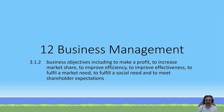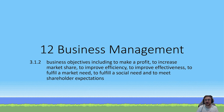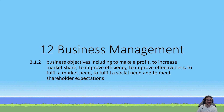G'day guys and welcome to this business management lesson. In today's lesson we're looking at key knowledge point 3.1.2, that is Unit 3, Area of Study 1, and the second key knowledge point for this area of study. Today specifically we're looking at business objectives, which include: to make a profit, to increase market share, to improve efficiency, to improve effectiveness, to fulfill a market need, to fulfill a social need, and to meet shareholder expectations.